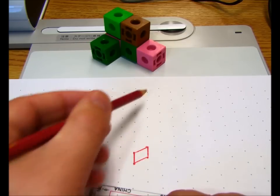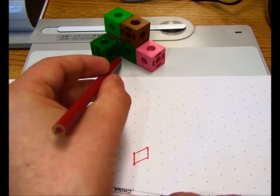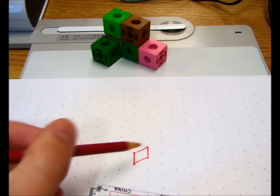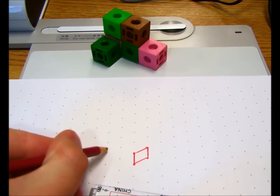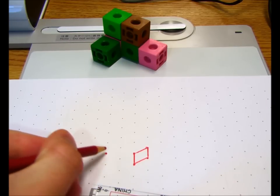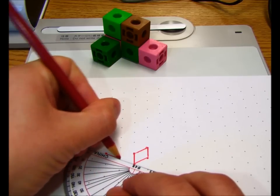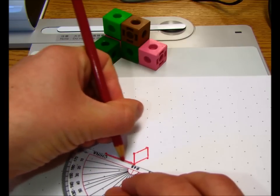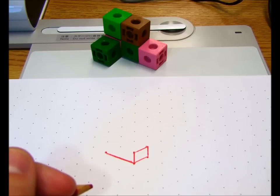Next, I'm going to go back to my original starting point, and then I'm going to count out how far it is from here to here. And it is two blocks, so that corresponds with two dots on our page. So one dot, two dot, draw a dot here. And then we just connect them. And I've drawn that bottom side.